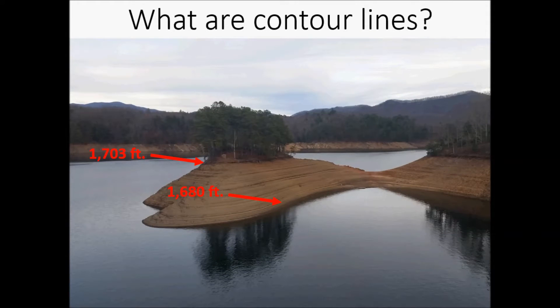The normal surface of Fontana Lake is 1,703 feet above sea level, and for this example we'll assume the surface of the lake is currently at 1,680 feet.